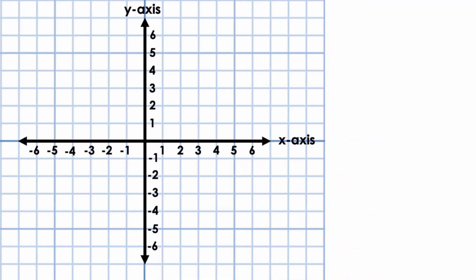The location or coordinates of any point on the coordinate plane can be identified using a pair of numbers. The first number in the pair identifies the point's location along the x-axis. The second number in the pair identifies the point's location along the y-axis. There is a special format for writing the coordinates: each number is written inside parentheses, separated by a comma. The first number listed is always the x-coordinate — this number refers to the point's location along the x-axis.